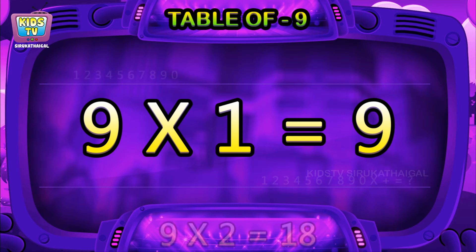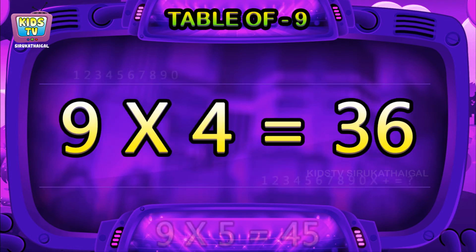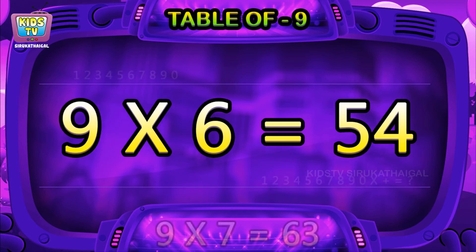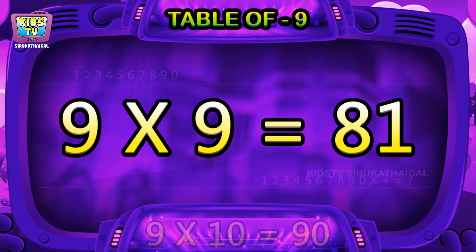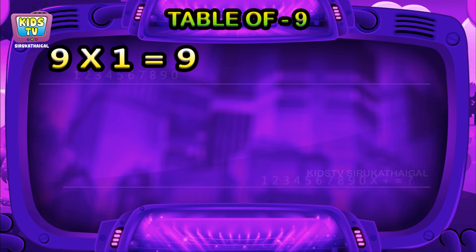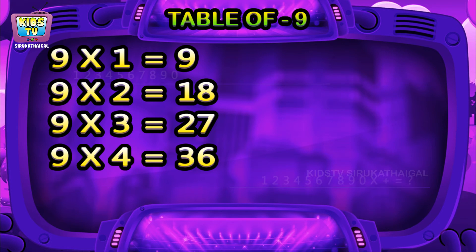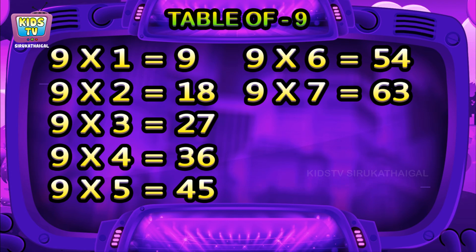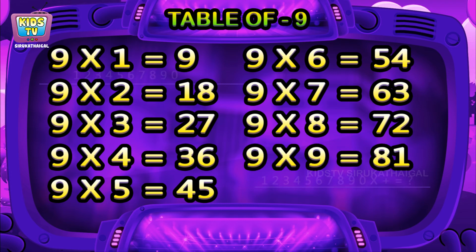Table of nine. Nine ones are nine, nine twos are eighteen, nine threes are twenty-seven, nine fours are thirty-six, nine fives are forty-five, nine sixes are fifty-four, nine sevens are sixty-three, nine eights are seventy-two, nine nines are eighty-one, nine tens are ninety.